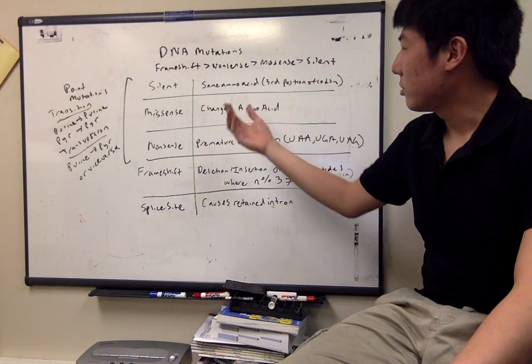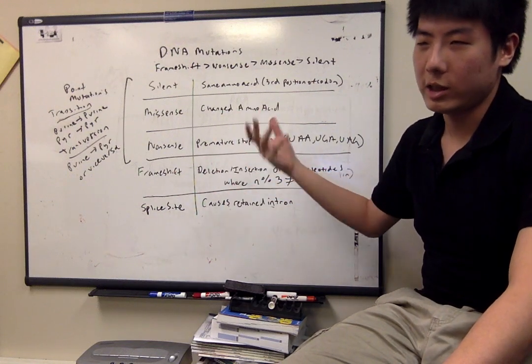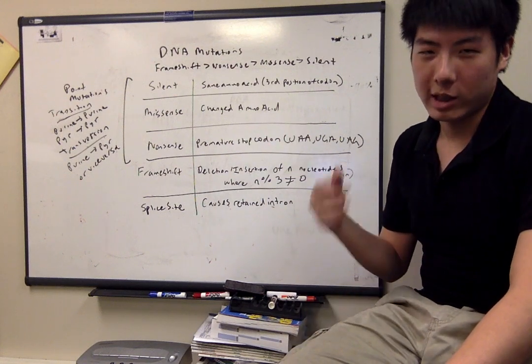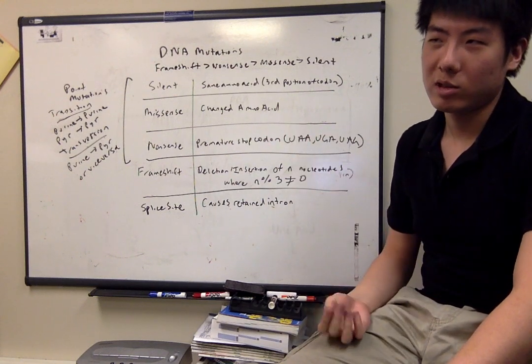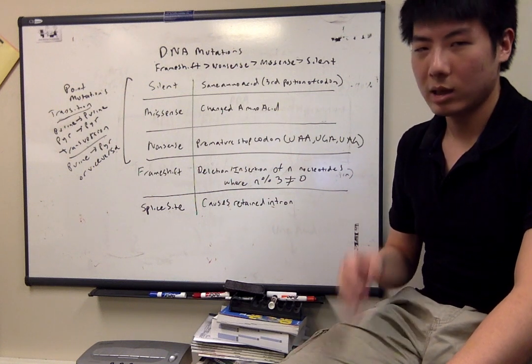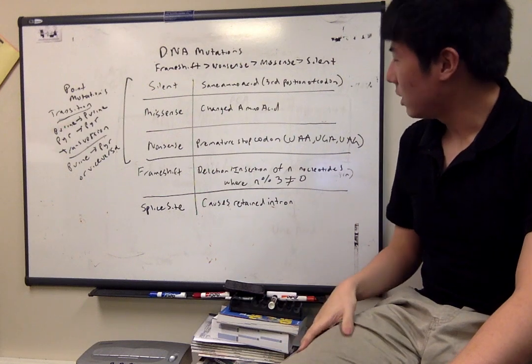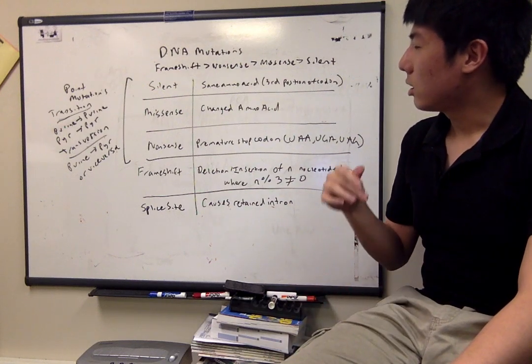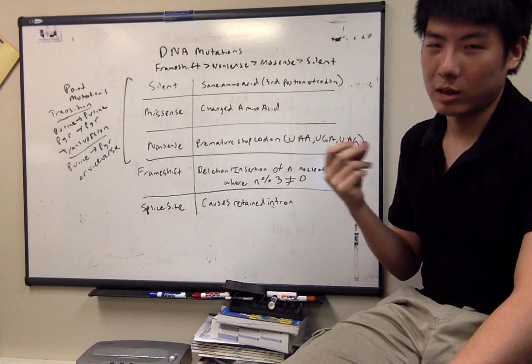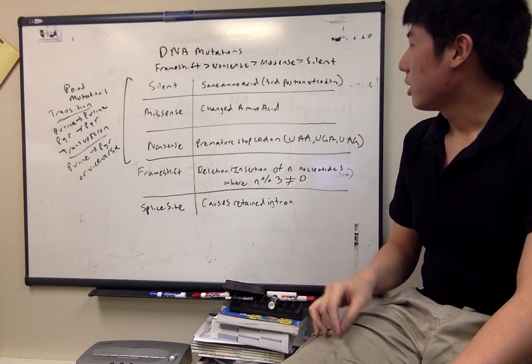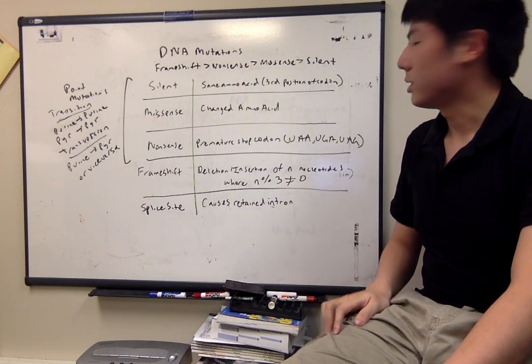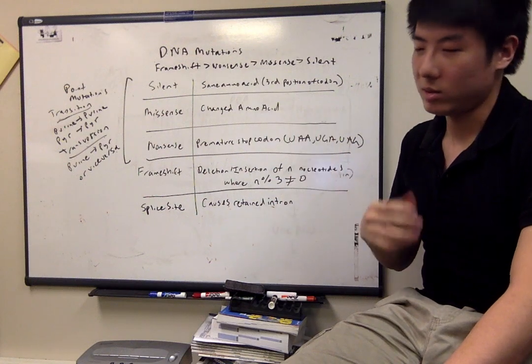A silent mutation is when the change in the residue does not result in a change of an amino acid. The reason that this is possible is because there is redundancy built into the genetic code, and a lot of the amino acids have multiple three-nucleotide codon sequences that code for them. In particular, the third position is often what's different, and this is known as the wobble hypothesis with tRNA.